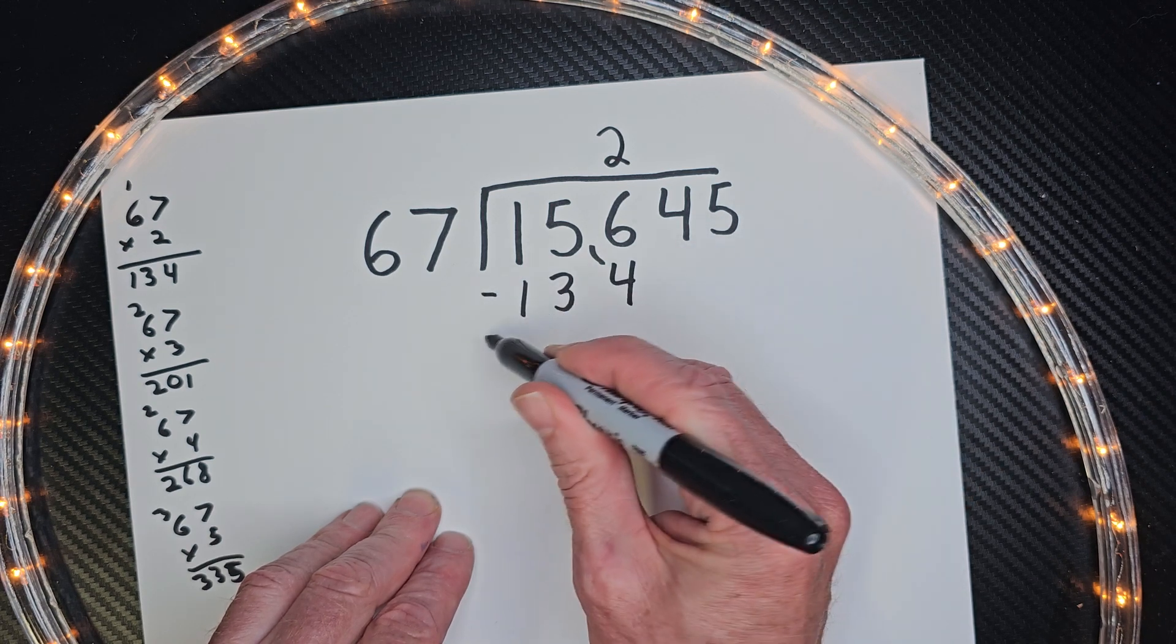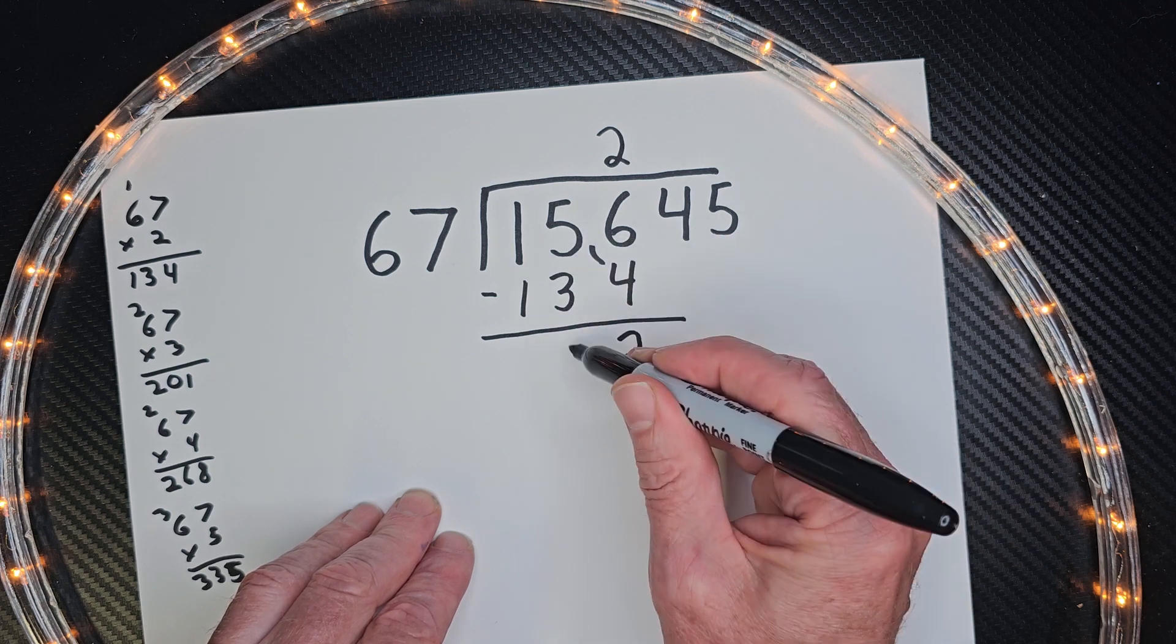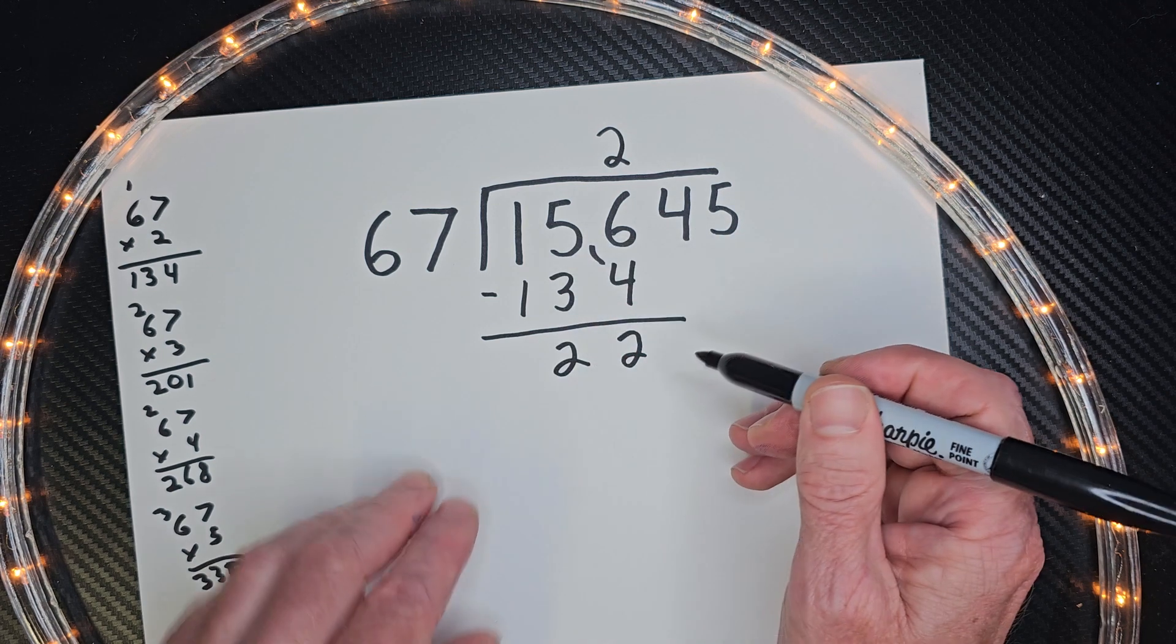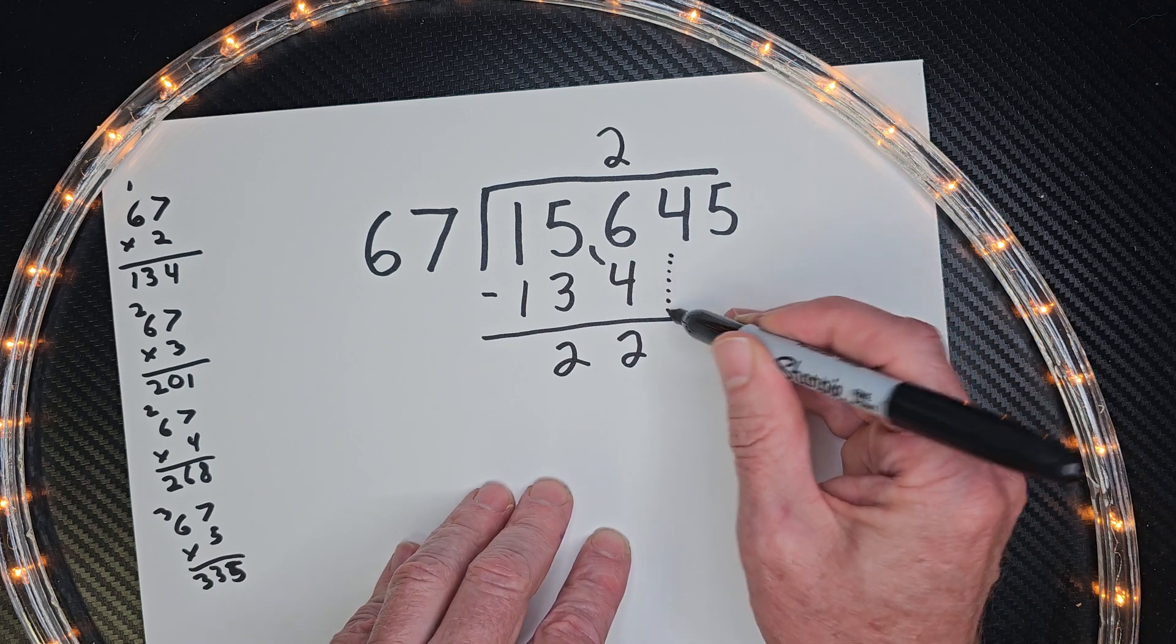So 2 times 67 would be 134. And then I subtract. 6 minus 4 is 2. 5 minus 3 is 2. Now I bring down the next number right here.